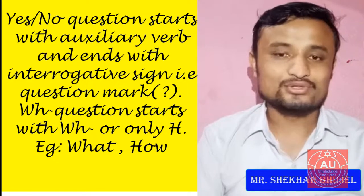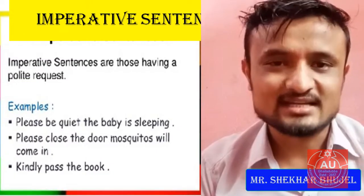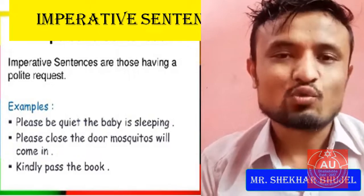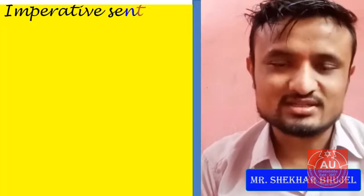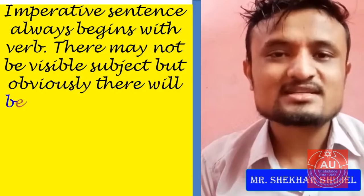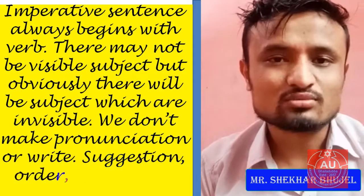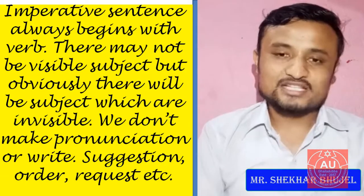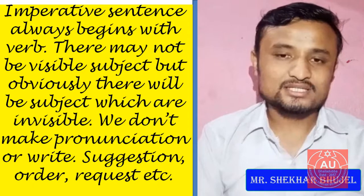The third type is the imperative sentence. An imperative sentence is the type of sentence which suggests commands and requests. It ends with a full stop but begins with only a verb. For example: 'Open the door.' 'Don't play in this area.' 'Please give me five reviews.' Suggestions, orders, and requests fall under the imperative sentence.